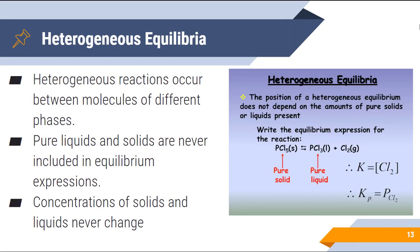The last thing I want to talk about today is heterogeneous equilibria. These are reactions that occur between molecules of different phases — solid, liquid, and gas. Pure liquids and solids are never included in equilibrium expressions because the concentrations of solids and liquids never really change. For example, ice melted is still 100% water, so the concentration doesn't change. Aqueous solutions and gases are things we include in our equilibrium expression. So if you see a solid or liquid, don't include it in your expression.